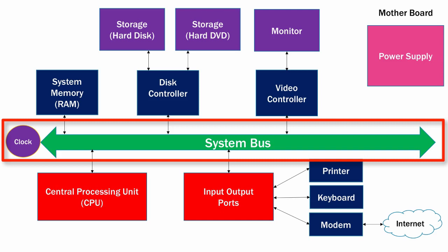The faster the clock speed for a computer, the better for you. On each clock cycle, a computer executes instructions. So the faster that clock cycle is, the more work the computer can get done. Typically, the faster the clock speed, the better off and the faster the computer will operate.